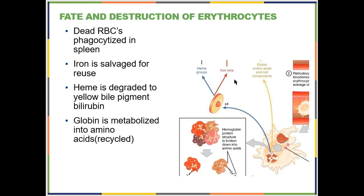Your red blood cells do not last forever, and you have a lot of them, so there's a specialized process to deal with dead red blood cells. This is a possible open-ended exam question. Macrophages in your spleen engulf and digest dead red blood cells. The iron is shipped to the liver, stored, and eventually sent back to the bone marrow to make more hemoglobin. The heme is degraded and turned into a bile pigment called bilirubin — this is why your feces are the color they are. The globin, which is the peptide chains, is broken down into amino acids and recycled into other proteins.